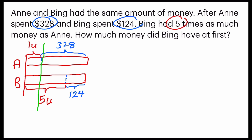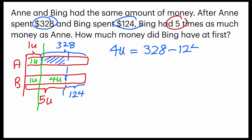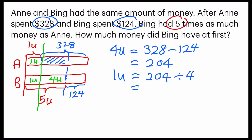Same thing — I'm going to do a comparison by drawing a line down. This equals to 1 unit, and I can infer that this portion is equal to 4 units. And how can I find out the 4 units? I find out this portion — so 4 units is equal to the difference of $328 and $124, which gives me $204. I can go ahead to find 1 unit, which is $204 divided by 4, giving me $51.